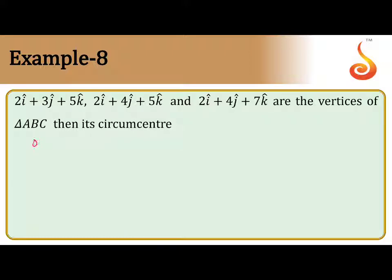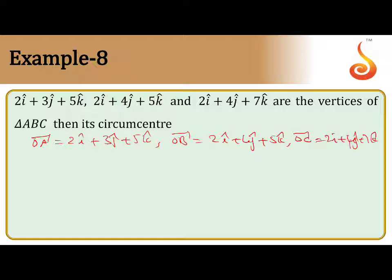So let us take OA vector will be 2i plus 3j plus 5k, OB vector is 2i plus 4j plus 5k, and OC vector is 2i plus 4j plus 7k.